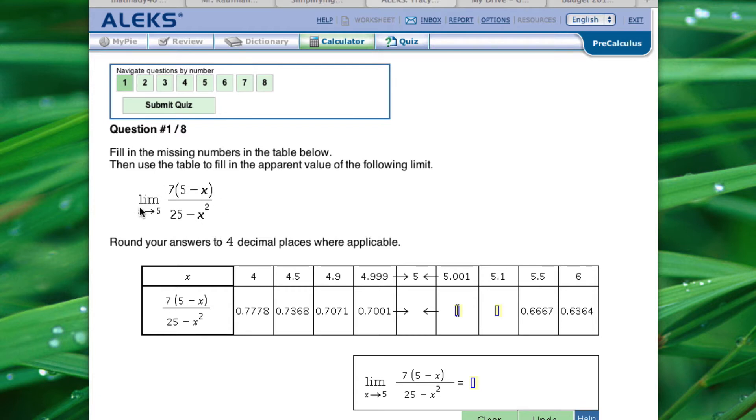So basically what we want to do is make an xy chart. These are your x values you're going to plug into this formula to get these y values. You can see what's happening is they're approaching this value 5, that's our limit, from the left side. So 4, 4.5, 4.9, 4.999, getting closer and closer to 5. And then we're going to approach it from the right side. So 6, 5.5, 5.1, 5.001.